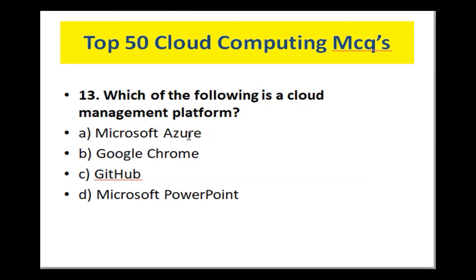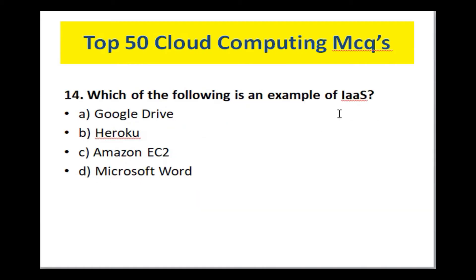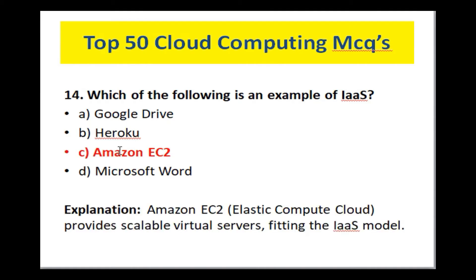Which of the following is a cloud management platform? Options are: Microsoft Azure, Google Chrome, GitHub, and Microsoft PowerPoint. Microsoft Azure is the correct option — it is a cloud service provider. Which of the following is an example of IaaS? Options are: Google Drive, Heroku, Amazon EC2, and Microsoft Word. Amazon EC2 is an example of Infrastructure as a Service. Amazon EC2 (Elastic Compute Cloud) provides scalable virtual servers, fitting the IaaS model.